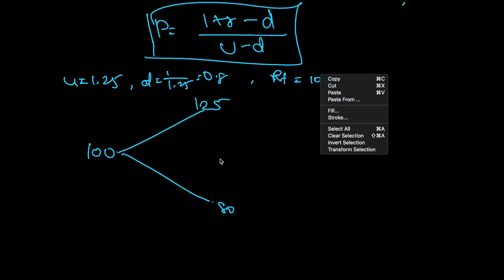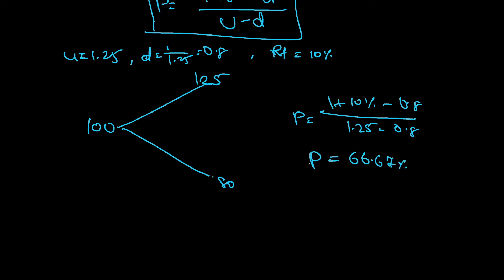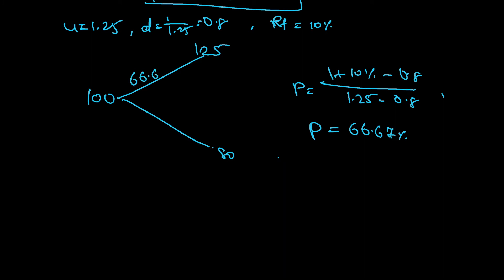As per the formula, the probability p is equal to 1 plus 10% minus the downtick 0.8, divided by the uptick 1.25 minus 0.8. If you calculate, it comes to around 66.67% probability. So there is a 66.67% probability the stock goes from 100 to 125, and 1 minus p, which is 33.33%, probability it goes from 100 to 80.